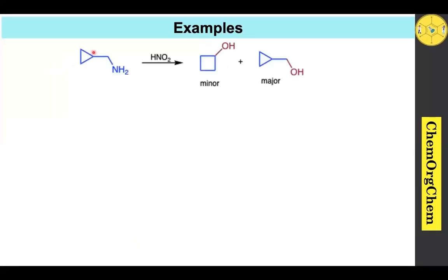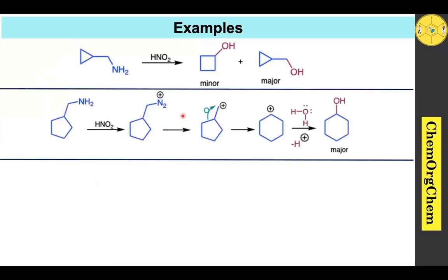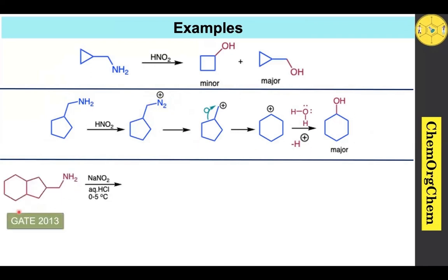Let's see some examples. When cyclobutane methanamine is treated with nitrous acid, the rearranged product is the minor product since the cyclopropyl methylcarbocation is more stable, providing cyclopropyl methanol as the major product. In another example, when cyclopentane methanamine is treated with nitrous acid, the corresponding diazonium ion is generated; after losing nitrogen gas, the carbocation is formed. A carbon atom migrates toward the carbocation center, resulting in ring expansion, followed by trapping by water to give the ring-expanded alcohol as the major product. This is also the question from GATE 2013.